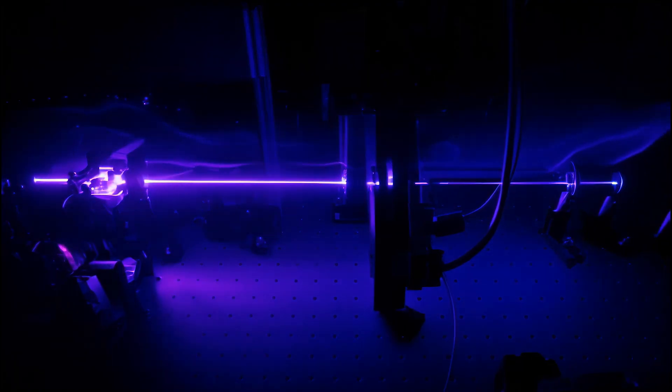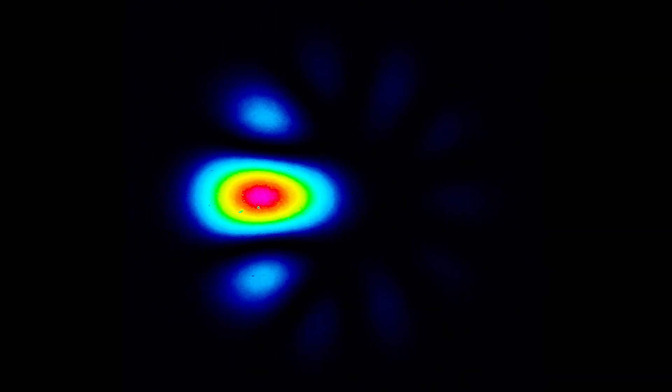Properties of light such as its spatial structure or its structure in time allow us to encode massive amounts of information on a single particle of light.